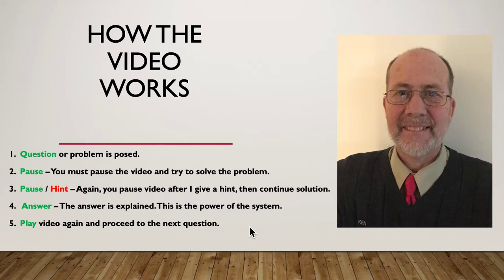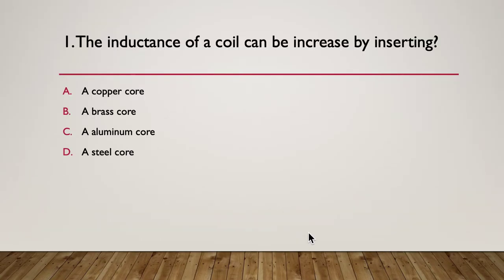Step 5, again you continue to play the video to the next question. So let's get underway with a multiple choice: the inductance of a coil could be increased by inserting what? A copper core, a brass core, an aluminum core, or a steel core. Again, we're now thinking about factors affecting inductance.